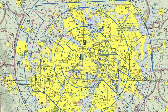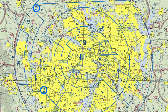In each one of these sectors, Class Bravo airspace has a different floor — the bottom of the airspace where it starts. Starting from the west and making our way in toward the center: this section has Class Bravo from 6,000 up to 11,000; then 5,000 to 11,000; then 4,000 to 11,000; then 3,000 to 11,000; then 2,000 to 11,000. And right around the airport it goes from the surface to 11,000. All those altitudes are MSL.